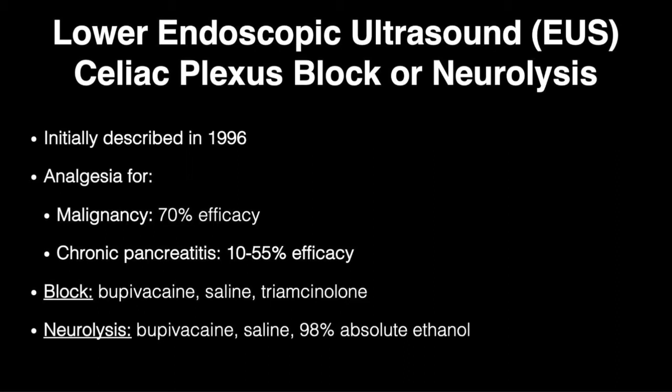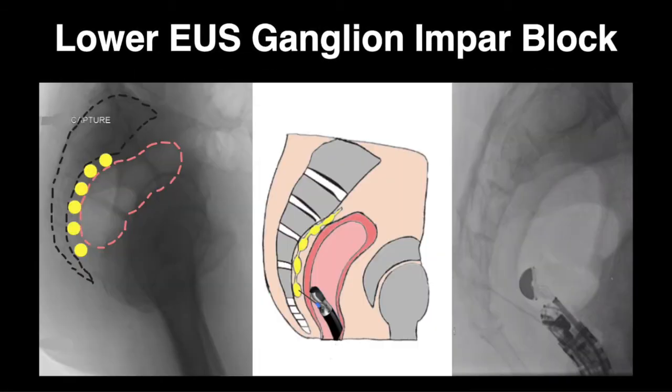Ethanol is used as a substitute for the steroid in the setting of neurolysis. Here we present a novel approach to ganglion impar blockade for chronic proctalgia utilizing lower EUS and fluoroscopy.